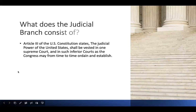So what does the judicial branch consist of? We know that the executive is the president, the legislative branch is the Senate and the House of Representatives, making up Congress. Article III of the U.S. Constitution tells us what's in the judiciary: 'The judicial power of the United States shall be invested in one Supreme Court and in such inferior courts as the Congress may from time to time ordain and establish.'